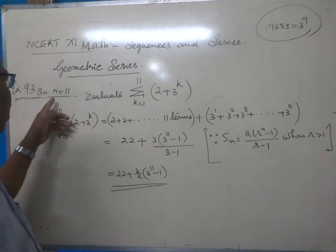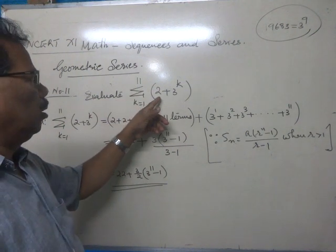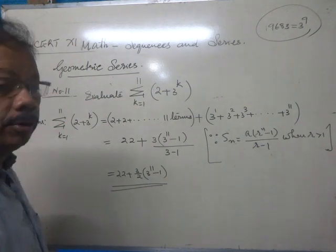Now, in the same exercise, question number 11, you are going to read sigma k equals 1 to 11, 2 plus 3 raised to k. We shall solve it.